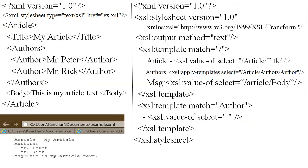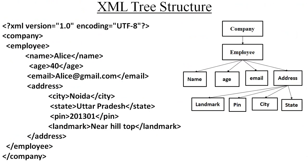Now some more programs of XML I am explaining in this lecture. You can see the tree structure of XML. Here we have an XML program and inside this program we have a company tag. Inside the company tag we have an employee tag — this is the XML tree structure. Inside employee we have name, age, email, and address fields. The address tag has four different sub-tags: landmark, pin, city, and state.